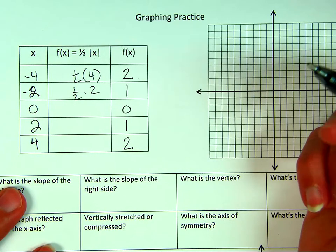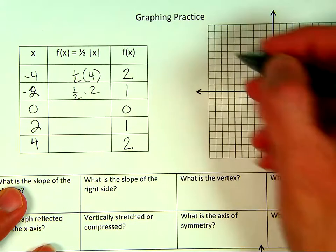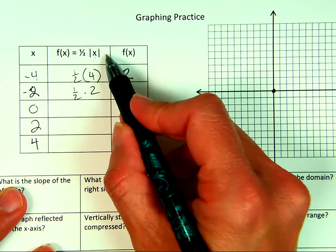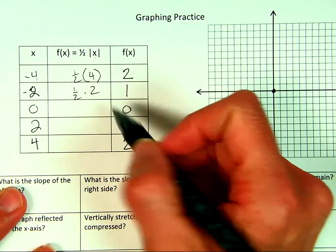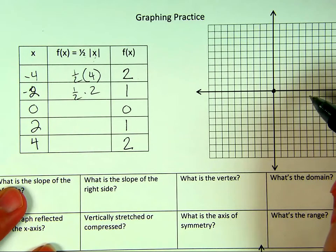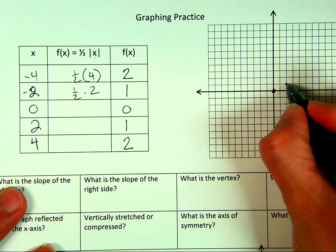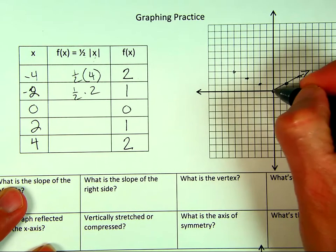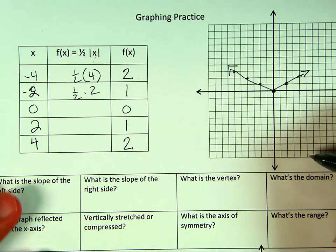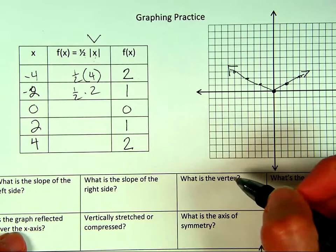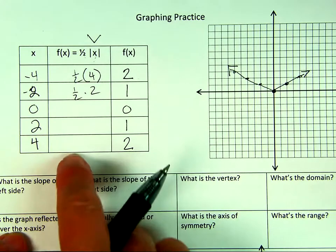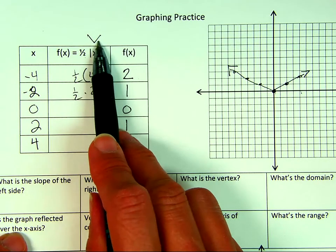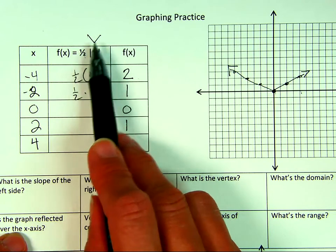That's the longer version. The easier way: recognize it's an absolute value opening up, so I know the vertex is (0, 0) — nothing inside or outside the absolute value to shift it. The slope is one half, so I go up one over two on the right side, and up one left two on the left side. A is positive, so it opens up and is not reflected. The one half tells me it's vertically compressed — between zero and one — and that's the same points I found with the table.